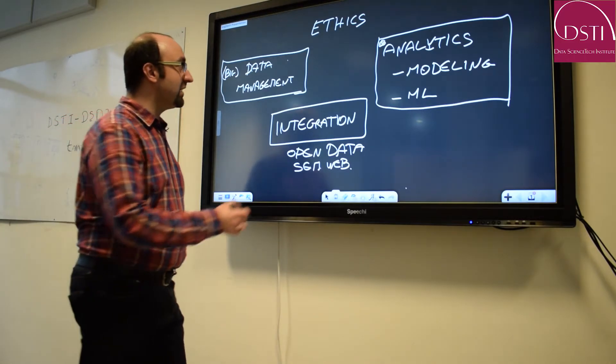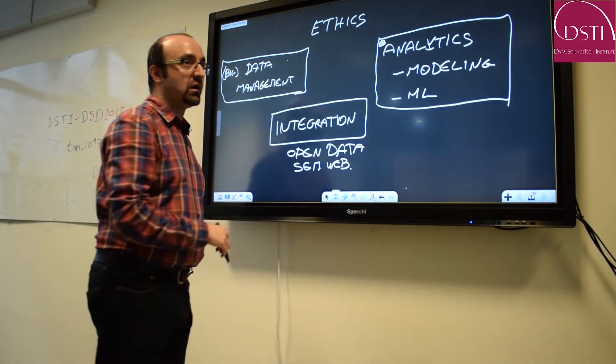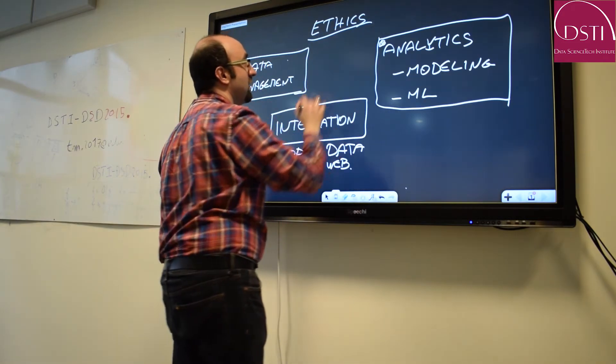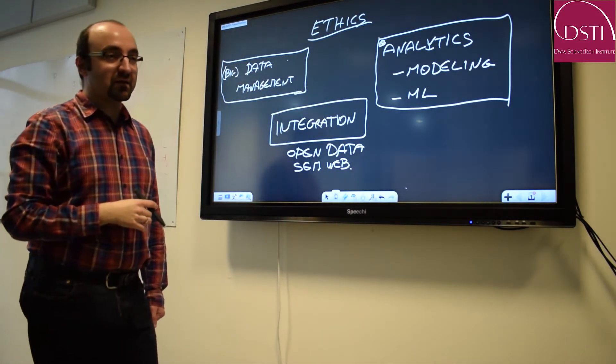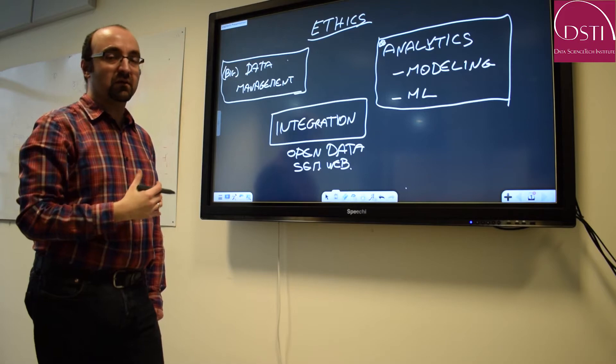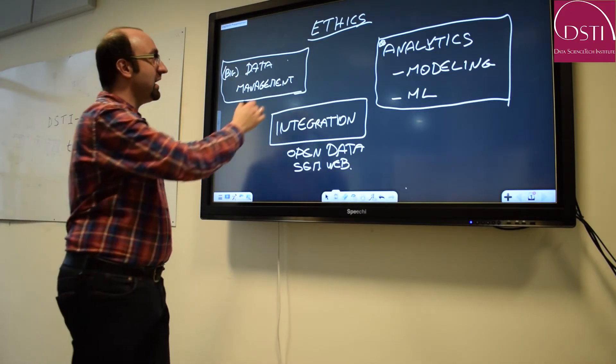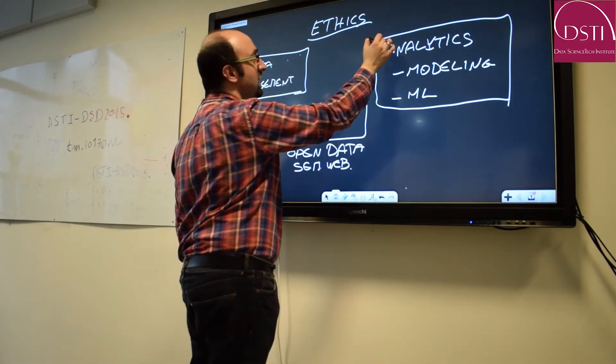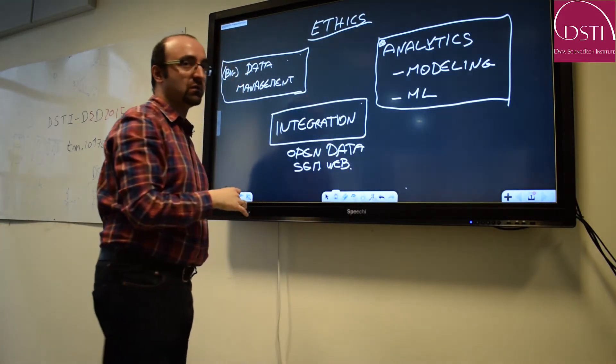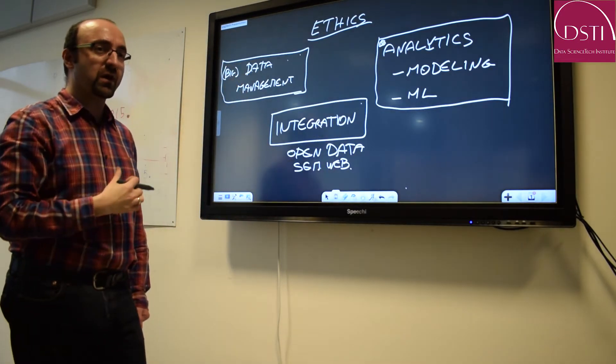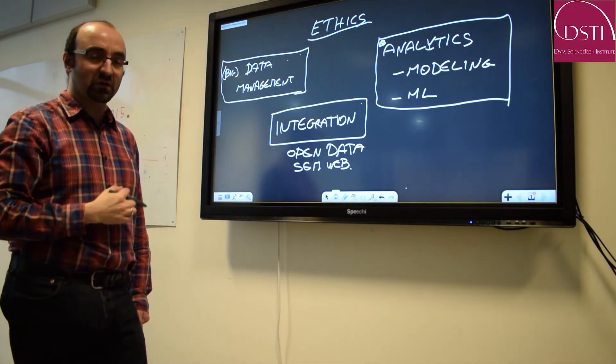And finally, underlying all these parts, I see ethics. Ethics is a very important part of data science in that any actor that is involved in any or a few of these aspects should always be aware of the ethical aspects of what he's doing.